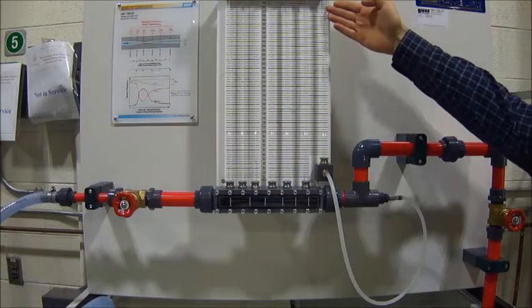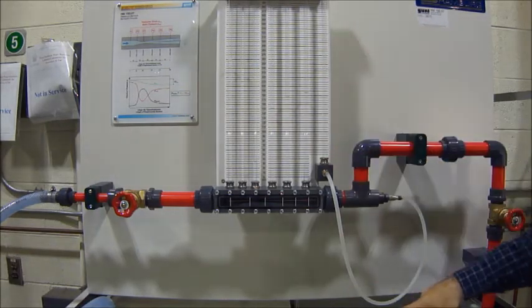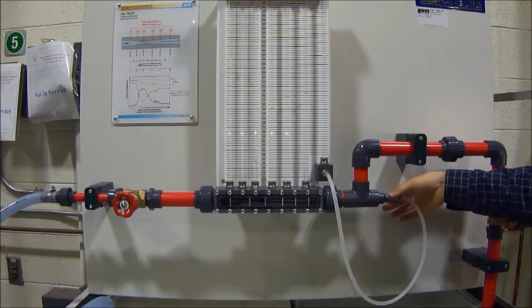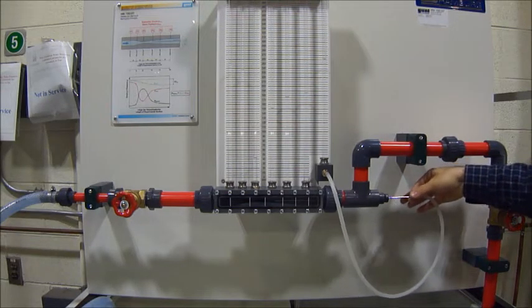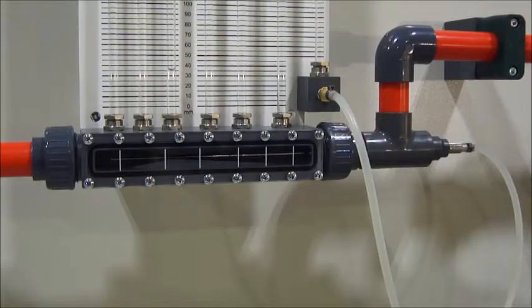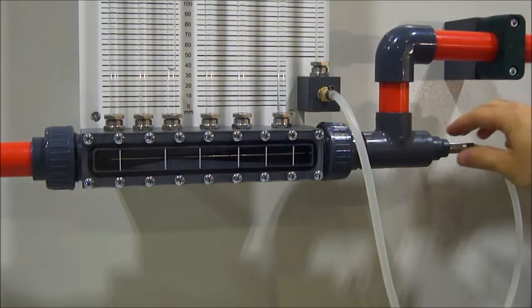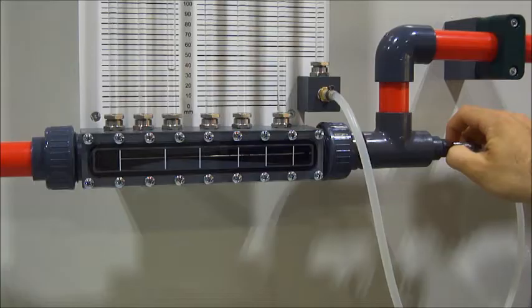Despite there only being one vertical tube for total pressure, the location of the reading can be changed by simply sliding the piece horizontally. First start by positioning the tip at the leftmost location.